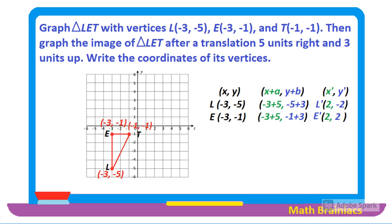Likewise, we do the same for point E. For the x coordinate, −3 + 5 gives us 2, and for the y coordinate, −1 + 3 gives us 2. So E prime is (2, 2). For point T, we add 5 to the x coordinate and 3 to the y coordinate, giving us T prime at (4, 2). Let us locate L prime at (2, −2), E prime at (2, 2), and T prime at (4, 2) on the coordinate plane.